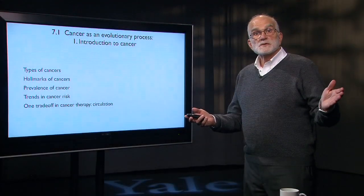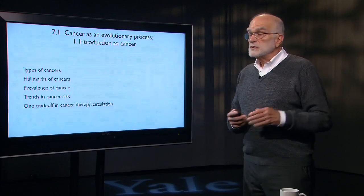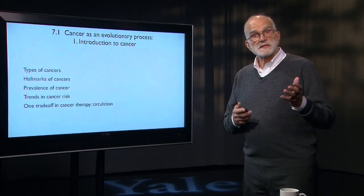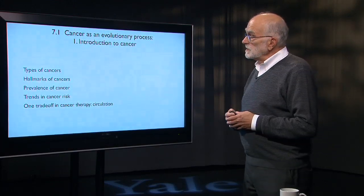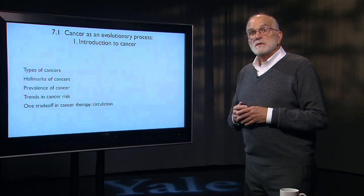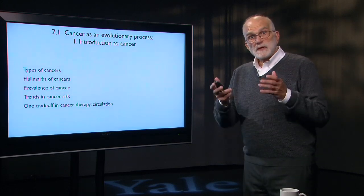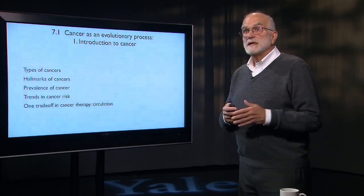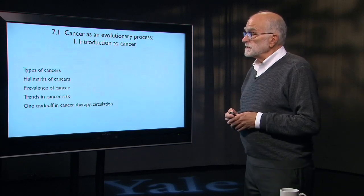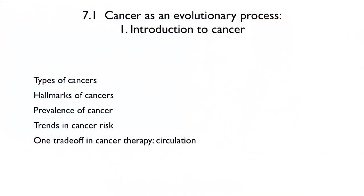We're now going to discuss cancer as an evolutionary process, and we will examine it in six different segments. In this one, we will introduce what cancer is and look at some of its general characteristics. That includes what types of cancers there are, what the hallmarks of cancer are, the prevalence, trends in cancer risk, and one of the principal tradeoffs in cancer, which is circulation.